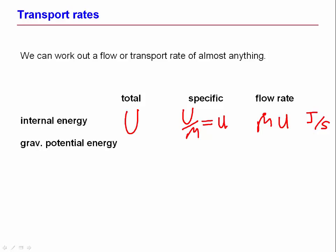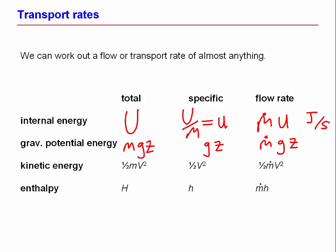You can do the same thing for gravitational potential energy. Mgz is the potential energy of a mass M. gz is its potential energy per unit mass. ṁ gz is the rate of transport of potential energy. And you can do that for lots of different quantities, kinetic energy, enthalpy, and so on.